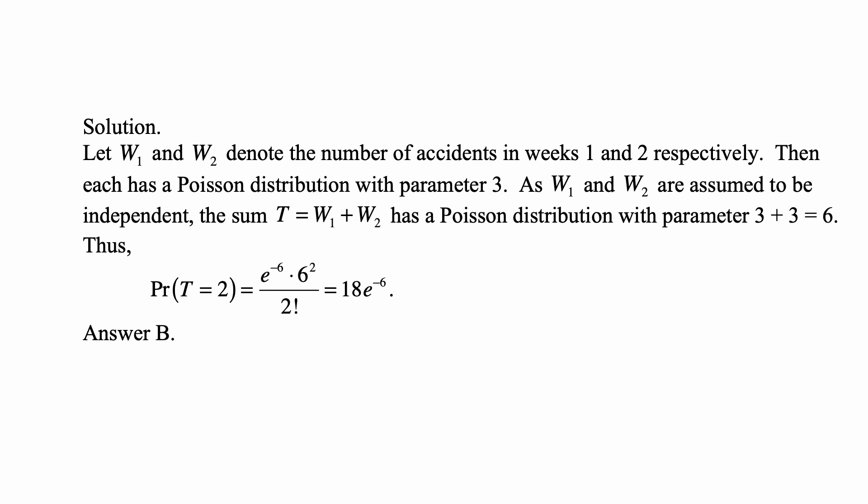And therefore, the probability that T is equal to 2 is equal to e to the minus 6 times 6 squared over 2 factorial. That is the same as 18e to the minus 6, which is answer B.